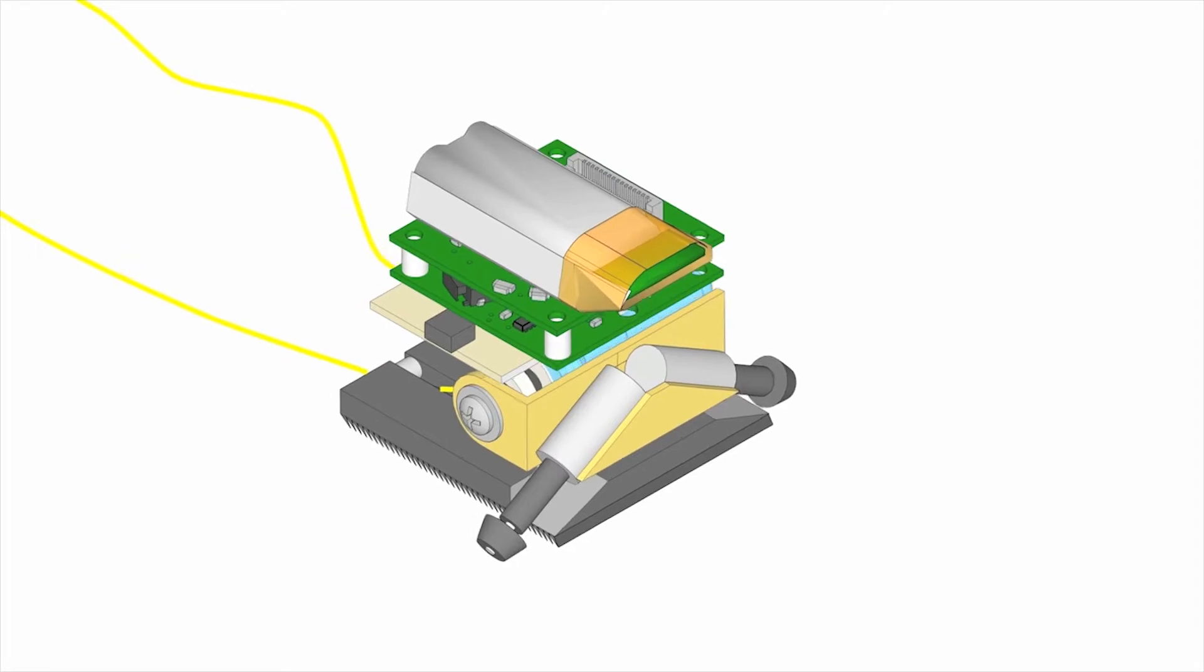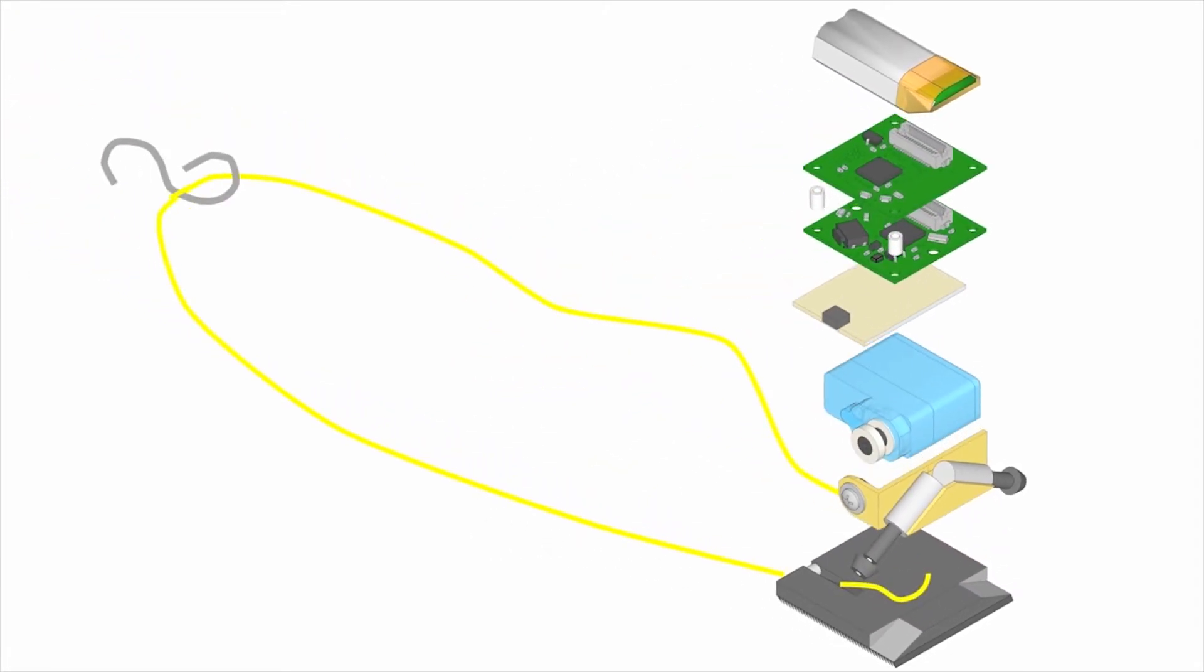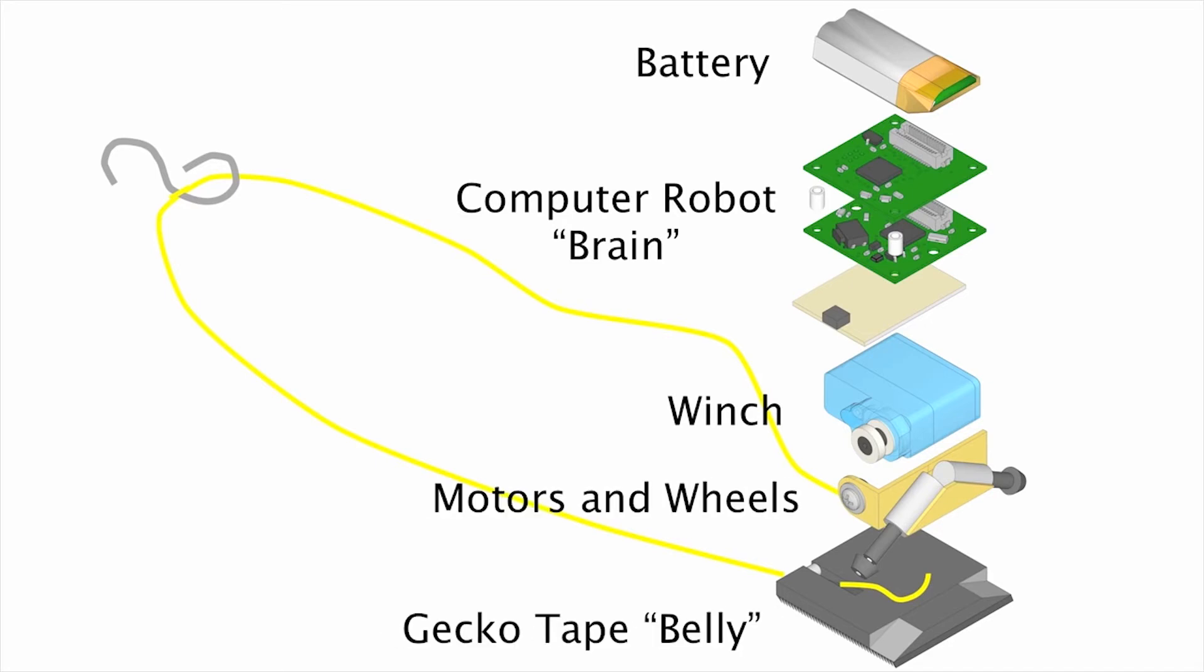Now let's look at all the pieces of the robot that allow us to decide when we want to stick to the ground and when we want to walk around. It includes a battery pack on top, a brain, a winch and spool that can reel in the weight, that microscopic gecko tape belly, and finally, a rope that can be attached to whatever the robot wants to pull.